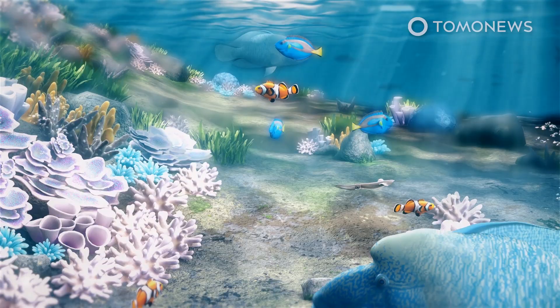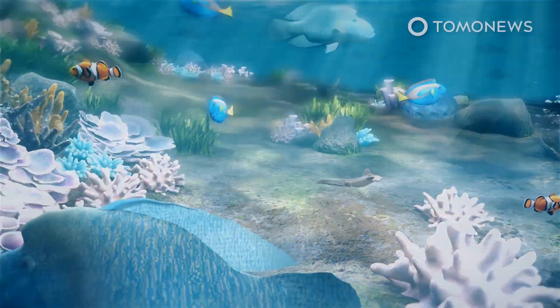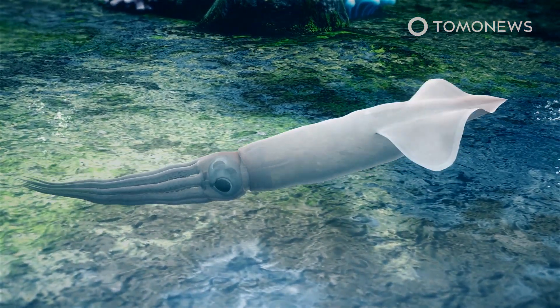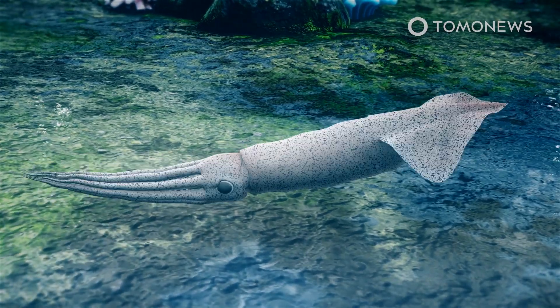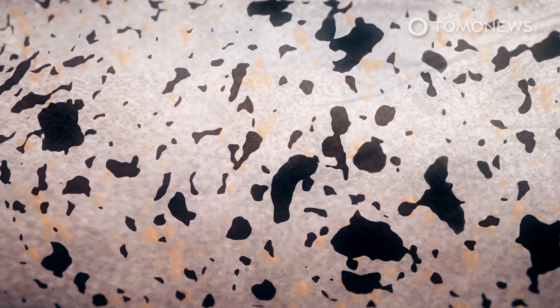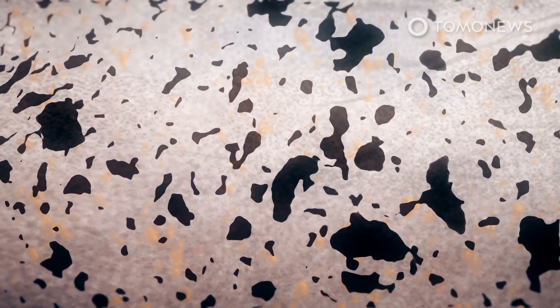Scientists have engineered color-shifting abilities into human cells. Researchers say their project is inspired by female opalescent inshore squids that evade predators by changing their colors from translucent to opaque white.